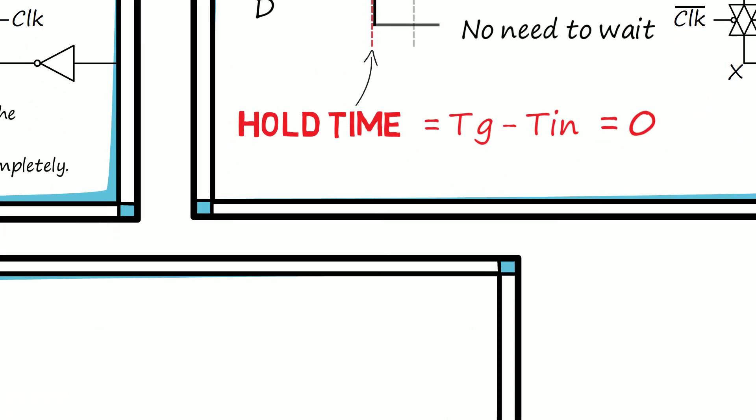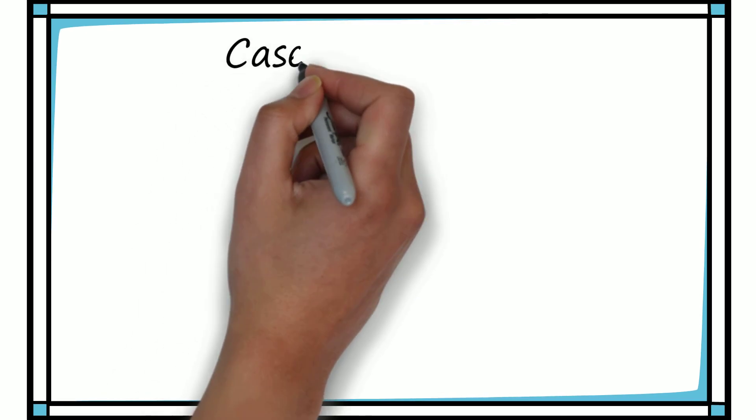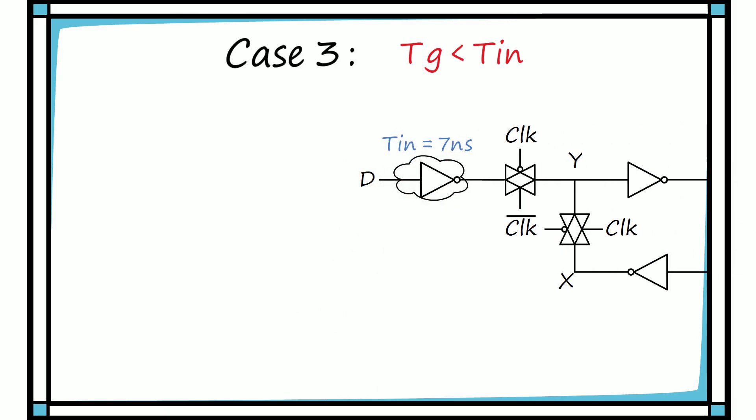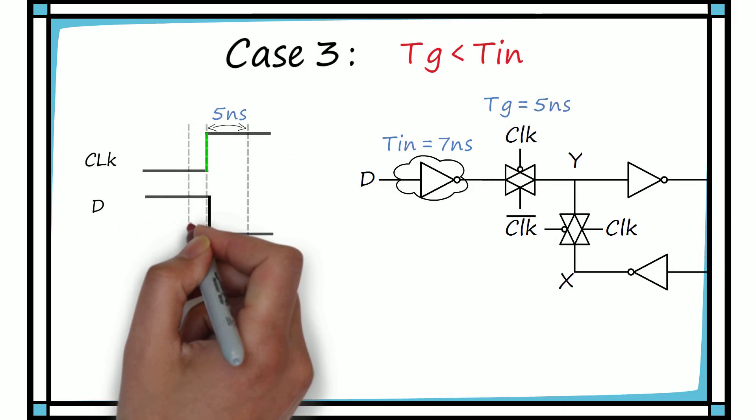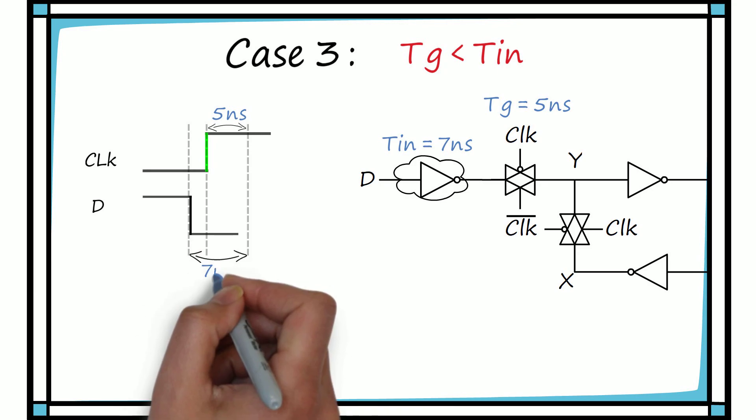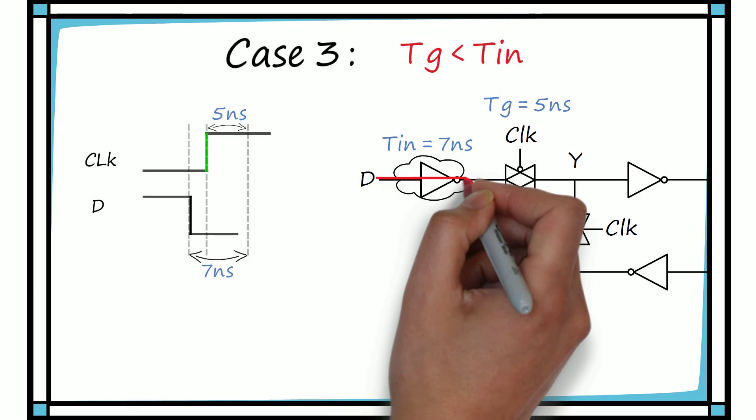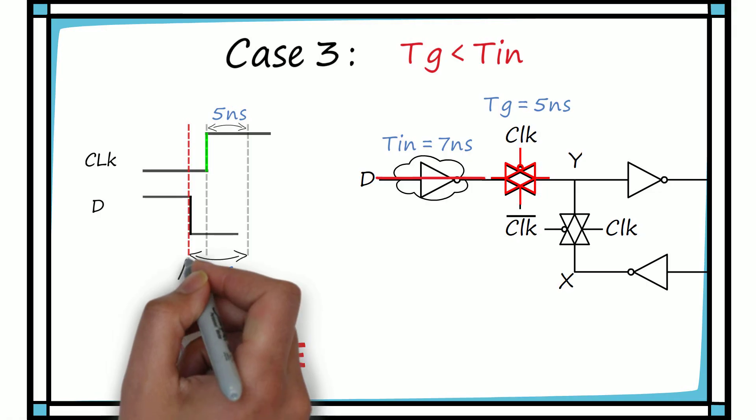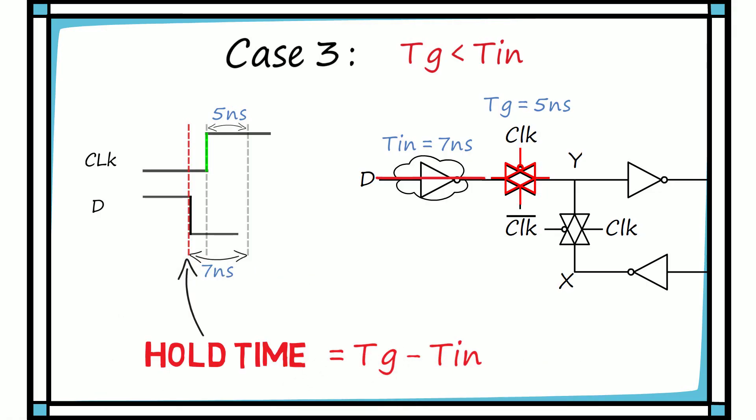Now, the third and the last case. Here, the data path delay is more than the transmission gate switching delay. Let TIN equal 7 ns while the TG is still 5 ns. Now, please observe carefully that if the data gets changed even 1 or 2 ns before the clock edge, the TIN delay is still sufficient to make sure that the transmission gate is turned off by the time it reaches the transmission gate. Hence, the hold time in this case comes out to be 5 minus 7 that is minus 2 ns.